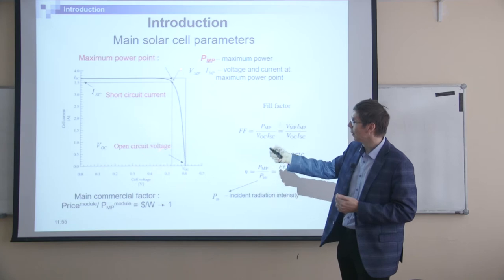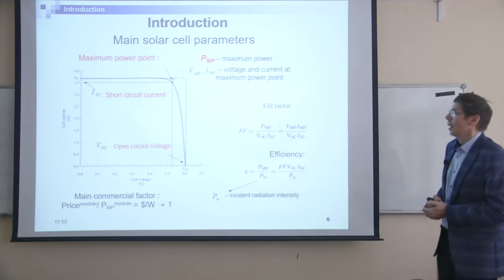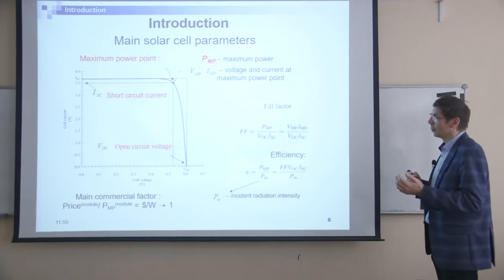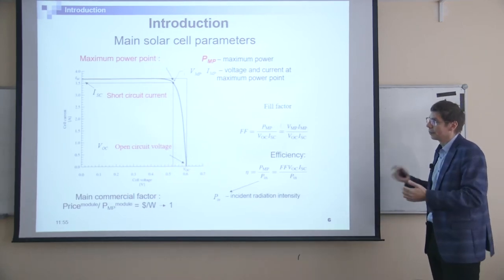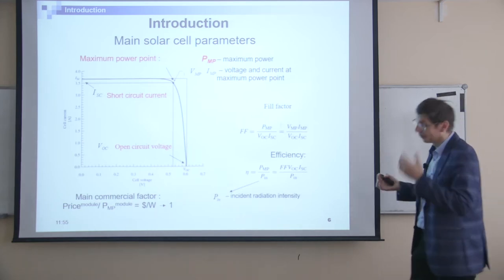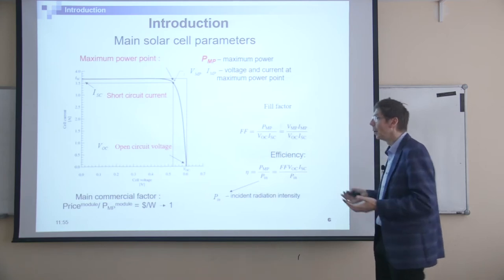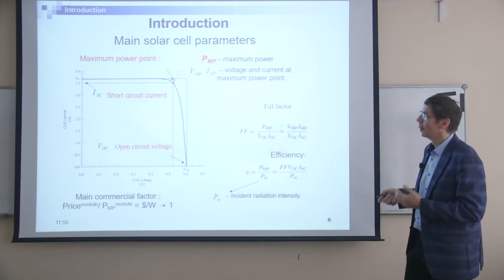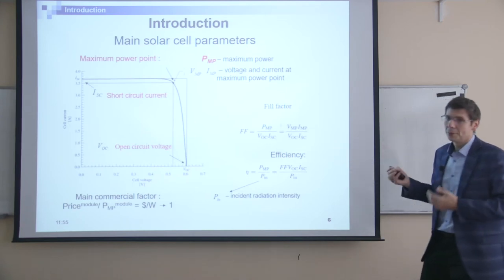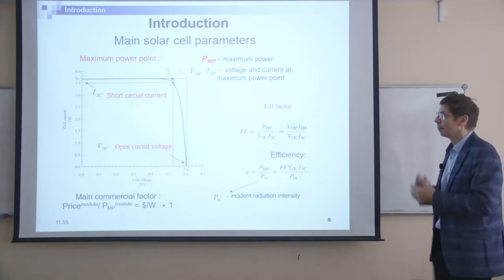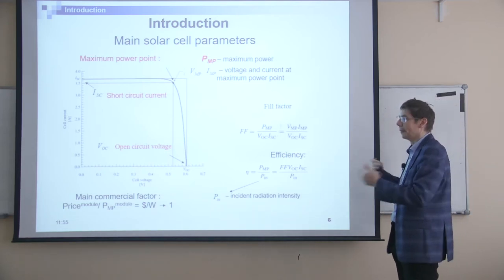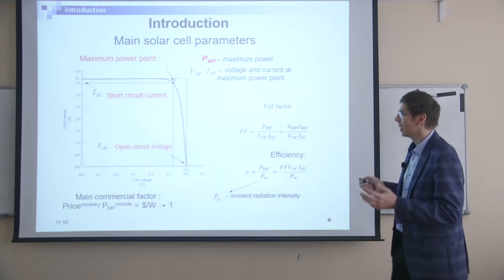Because solar cells are like a generator — they generate power — quite often people represent the IVQ in the positive current way. Just don't be confused by this difference; it's the same thing.